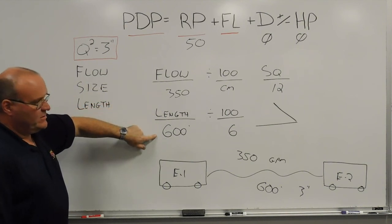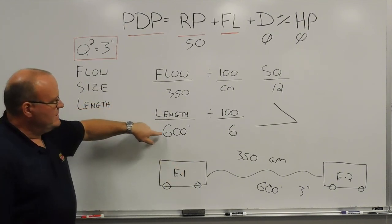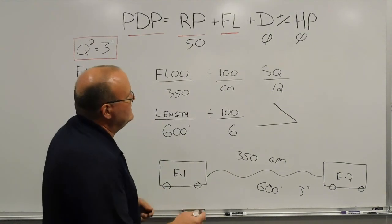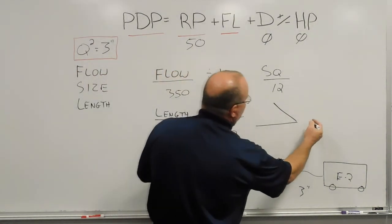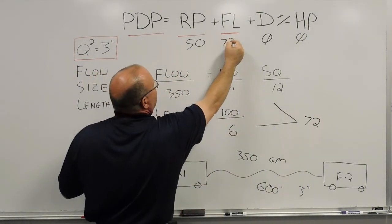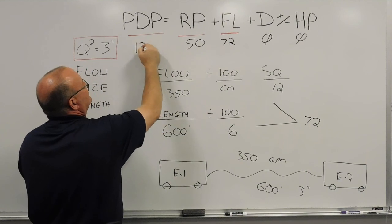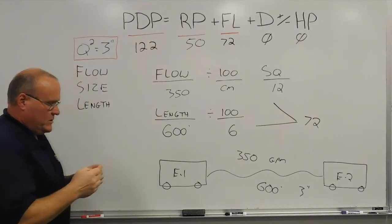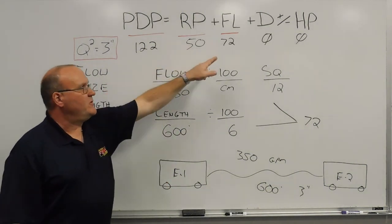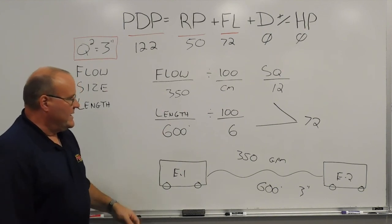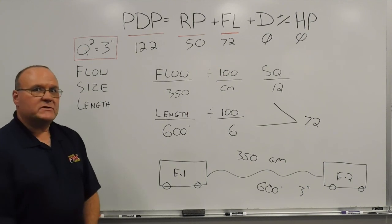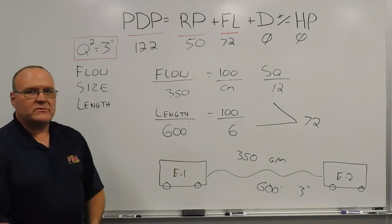For the length, we do the same step as earlier: 600 feet divided by 100 gives us 6. Then 6 times 12 gives us 72 pounds of friction loss. We put that into our formula and bring those two together: 122 pounds total from engine 1 to engine 2 — residual pressure of 50 plus friction loss of 72. That's today's training minute calculating the relay engine pump discharge pressure from engine 1 to engine 2 through 3-inch hose. Thank you.